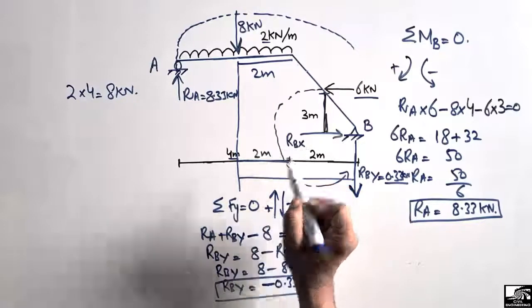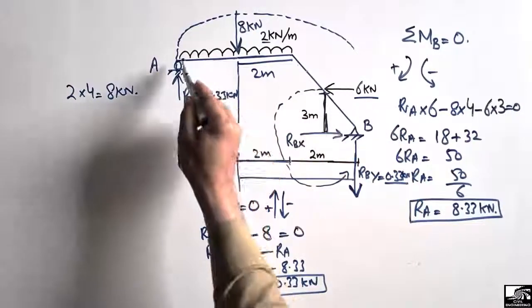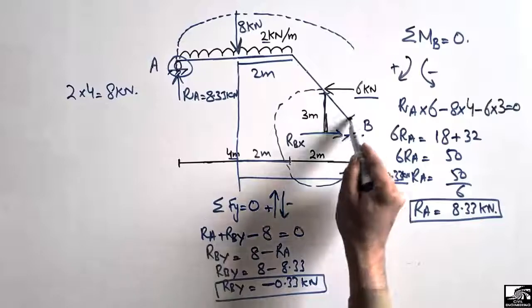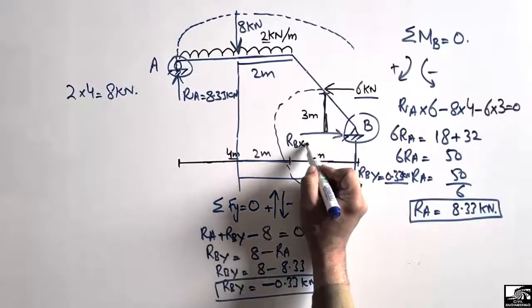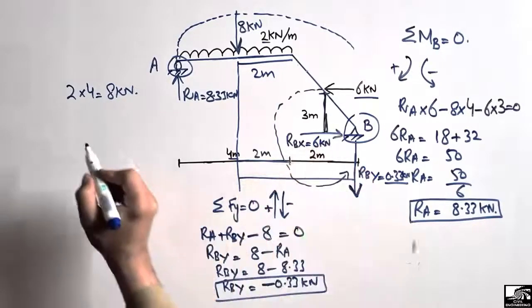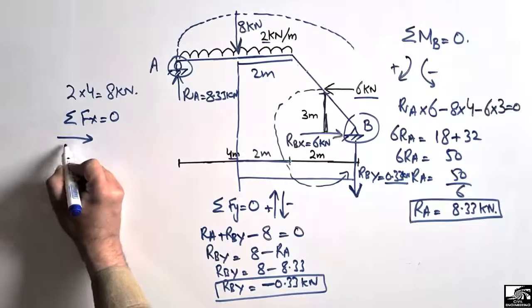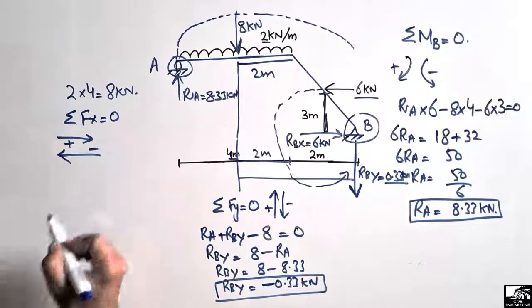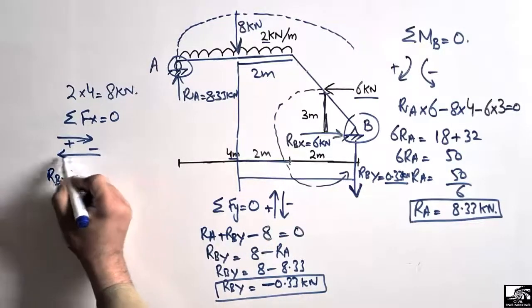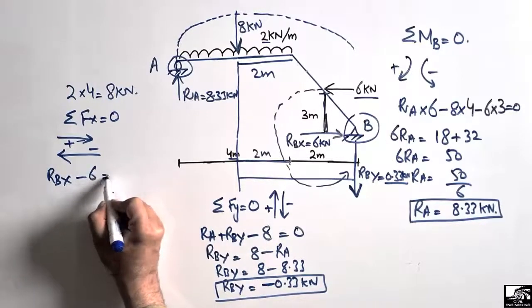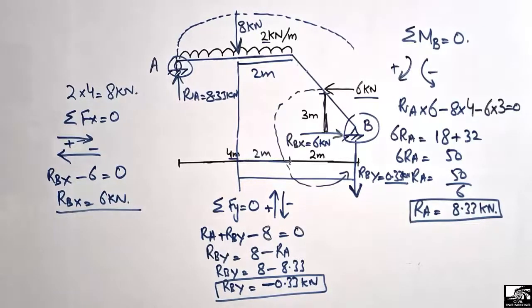To find RBx, we note that only the 6 kilonewton horizontal load is acting on this inclined frame. The roller support cannot resist horizontal load, so only the hinge support at B takes the horizontal load. Using the summation of horizontal forces equal to zero: RBx minus 6 kilonewton equals zero, so RBx equals 6 kilonewton.